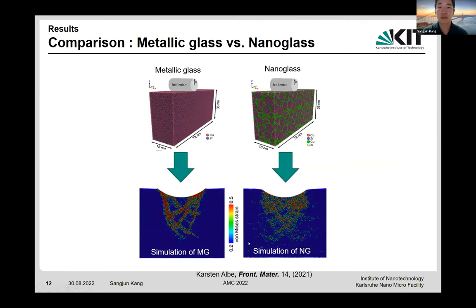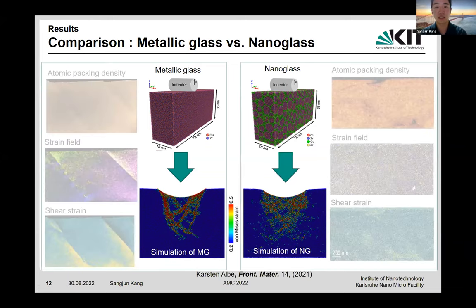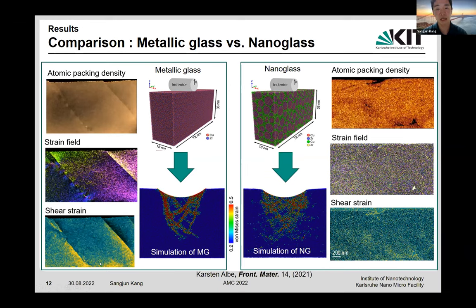Recently, the deformation behavior of nanoglass has been compared to metallic glass using MD simulation under indentation loading by Professor Albe at TU Darmstadt. The simulation reveals that strain is more largely delocalized for nanoglass compared to conventional metallic glass, where the interfaces of nanoglass work as scattering points for strain. Although the structure of the simulated nanoglass and our lab-made sample seem quite different, the observations are analogous to the simulation: localized deformation in the form of shear bands in metallic glass, whereas nanoglass shows homogeneous and isotropic deformation after the scratch test. Our observation experimentally confirms the special deformation behavior of nanoglass, which is intrinsically linked to their atomic structure at the nanoscale.